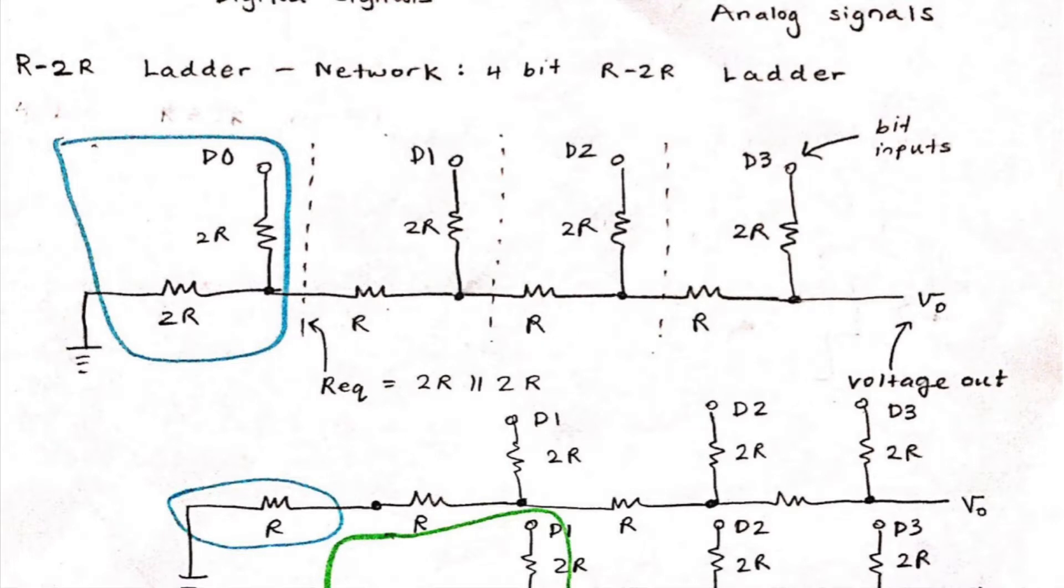And we have our Rs horizontally represented on the side. And our Vout finally being at the end, which represents our analog output voltage.